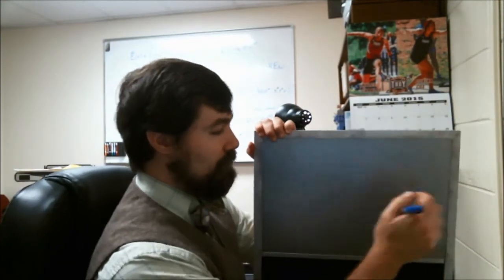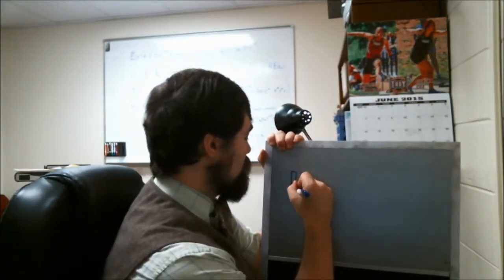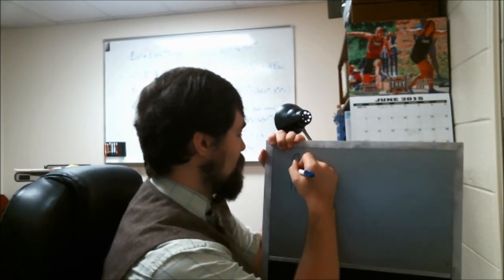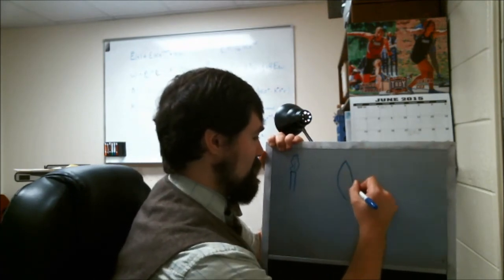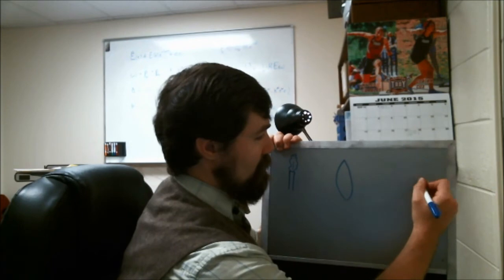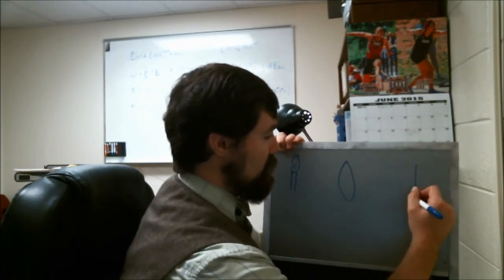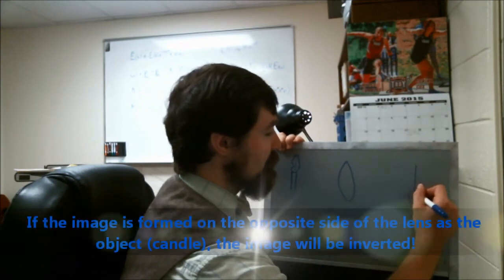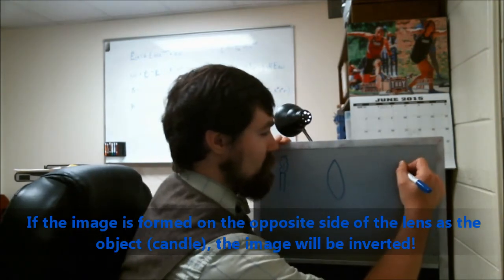So I'm going to go ahead and draw a diagram of that on my little board. So here, we'll place the candle. There's some flame from the candle. Here is our lens. And then maybe your screen is right here, and you get some image of the candle. Actually, the image may be upside down.